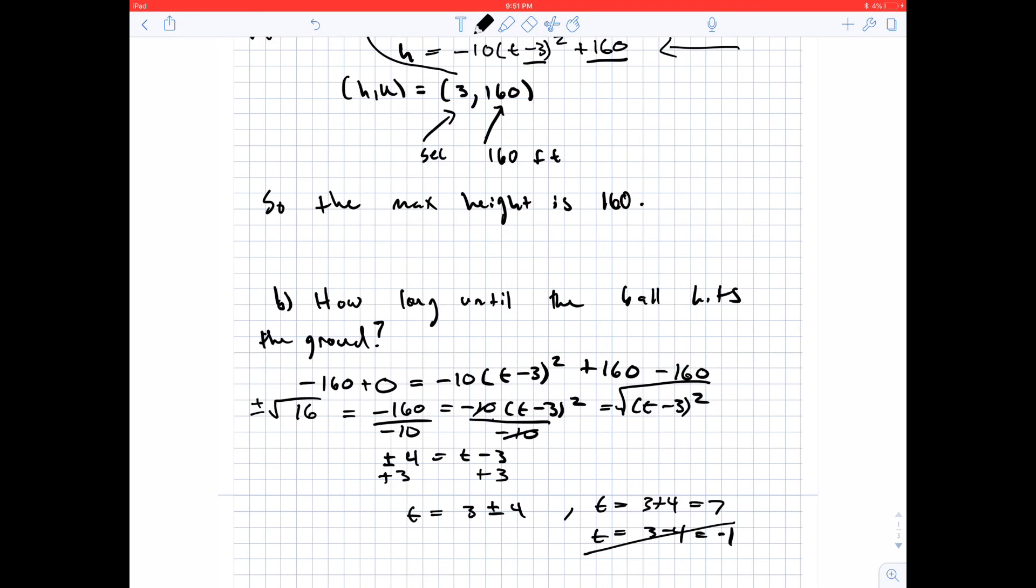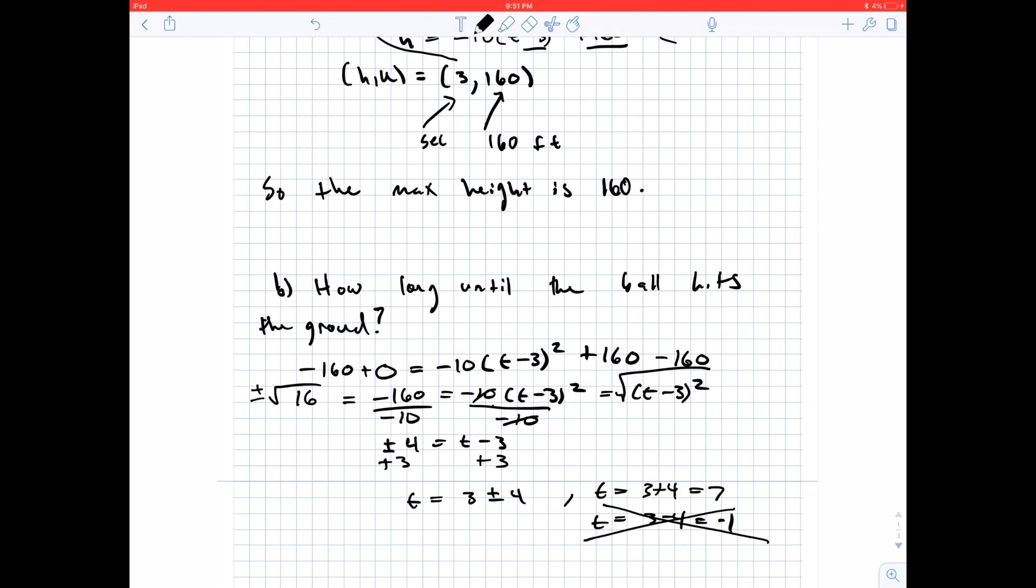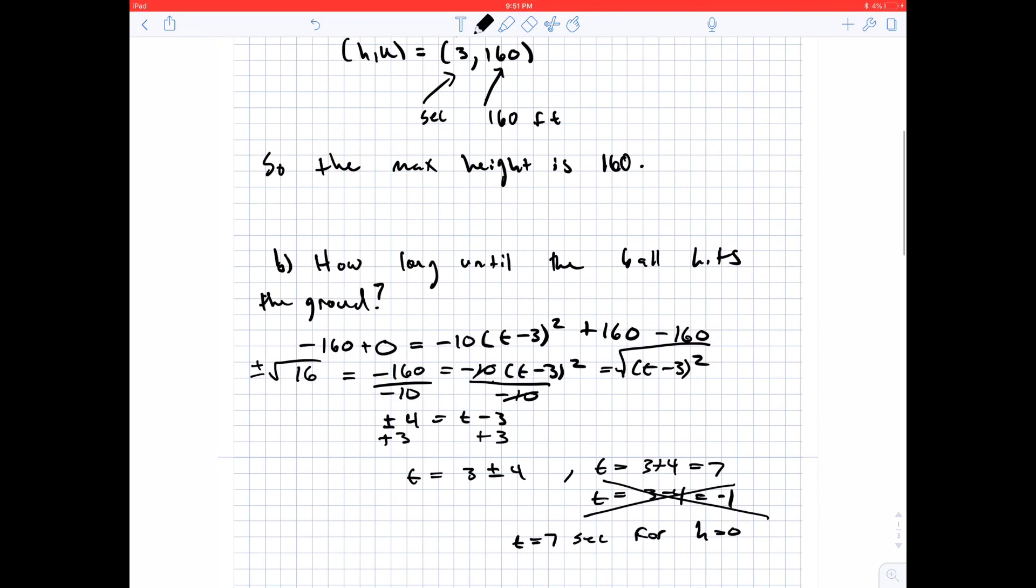So we get rid of the negative time, because we don't know how to interpret that. And in our physical model, we don't typically treat negative times as a valid time. So we'll just look at t equals 7 seconds for h to equal 0, or the ball hits the ground after 7 seconds.